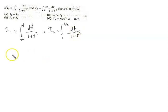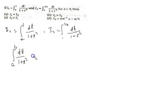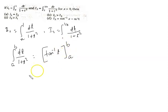We know that both integrands are the same: dt by 1 plus t squared. The integration of this term — with limit a tends to b — gives us tan inverse t. So putting the limits, it becomes tan inverse b minus tan inverse a.